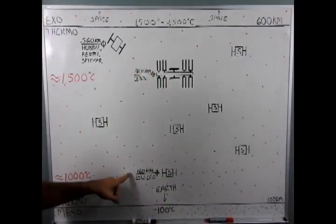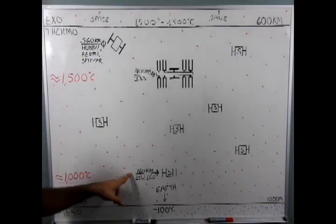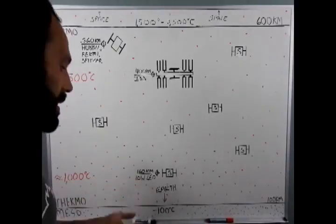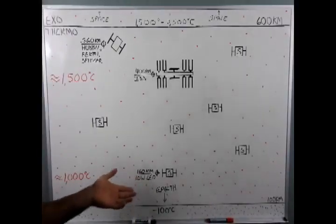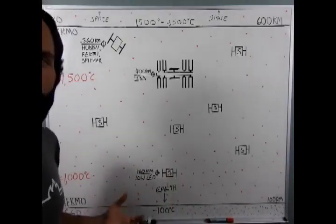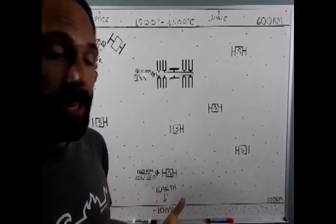Down here I've got the lowest LEO, which is supposed to be around 160 kilometers, and there's supposed to be thousands of satellites out there. This is just a representation, obviously not the scale.